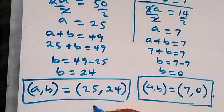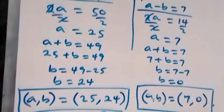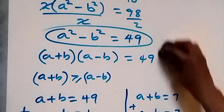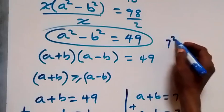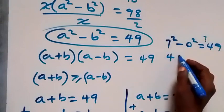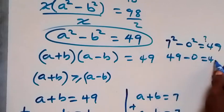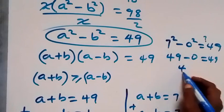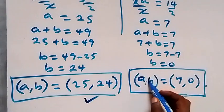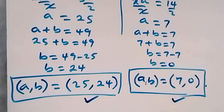We also test a = 7, b = 0: substituting into a² - b² = 49 gives 7² - 0² = 49 - 0 = 49, which equals 49. The left-hand side equals the right-hand side, so a = 7, b = 0 also satisfies the given problem.